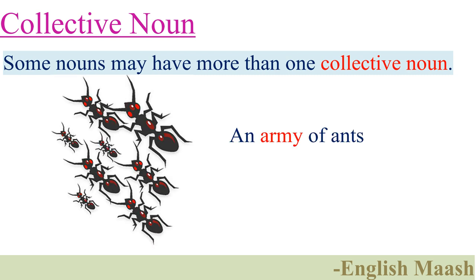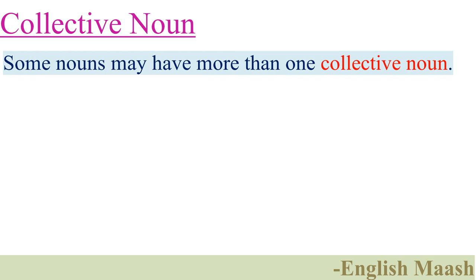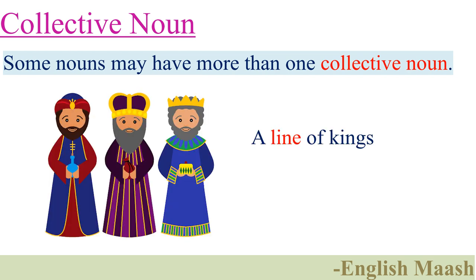An army of ants, a colony of ants — army and colony are correct collective nouns for ants. A line of kings, a dynasty of kings — line and dynasty are correct collective nouns for kings.